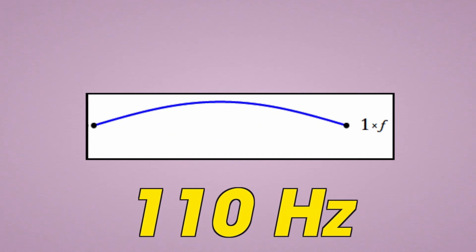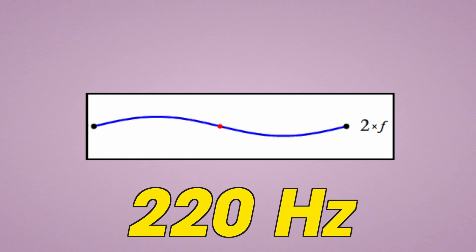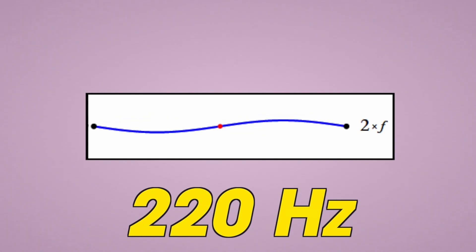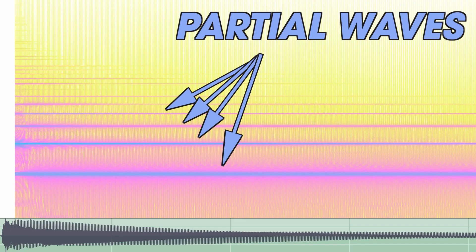But the string is actually vibrating at a bunch of different frequencies all at the same time. We pluck the string and the whole string moves back and forth at 110 times per second. But also, right along with it, the string is divided in half and each of those halves vibrates at twice that rate, 220 hertz. The string is also divided into 3 equal parts and vibrates at 330 hertz, and divided into 4, 5, 6, 7, 8, 9, 10 equal parts, and so on. So when we pluck a guitar string, we usually think of it as being one sound wave, but we can also think of that wave as being made up of a bunch of waves called partials.